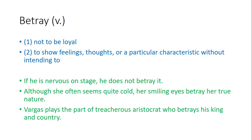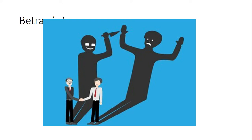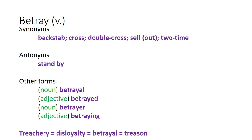Betray — it's a verb with two meanings. The first is not to be loyal; the second is to show feelings, thoughts, or a particular characteristic without intending to. Examples: Number one, if he is nervous on stage, he doesn't betray it. Number two, although she often seems quite cold, her smiling eyes betray her true nature. Number three, Vargas plays the part of a treacherous aristocrat who betrays his king and country. Synonyms: backstab, cross, double cross, sell out, two-time. Antonym: stand by. Other forms: betrayal, betrayed, betrayer, betraying. Betrayal means treason, disloyalty, treachery.